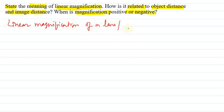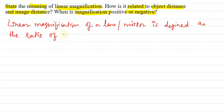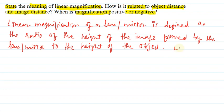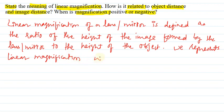Linear magnification of a lens or mirror is defined as the ratio of the height of the image formed by the lens or mirror to the height of the object. Linear magnification is represented by the letter m. m is equal to h_i upon h_o, where h_i is the height of the image and h_o is the height of the object.